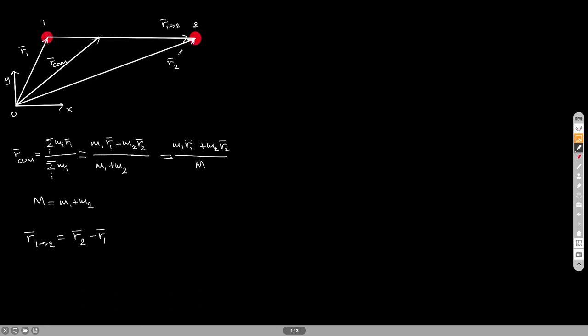R2 is the position vector of object 2, the tip is at 2 at the object, the tail is at the origin. Now, the vector R that goes from 1 to 2 has the tail at 1 and the tip at object 2. The center of mass, so if the center of mass is somewhere here, then RCOM is the position vector of the center of mass. The tip is at the center of mass and the tail is at the origin.